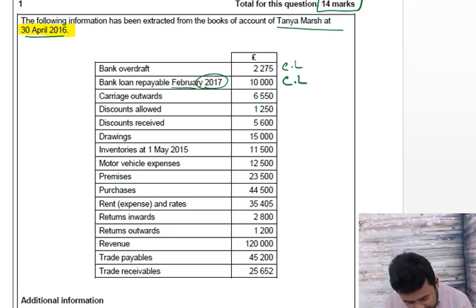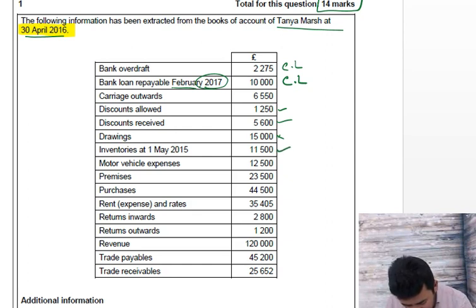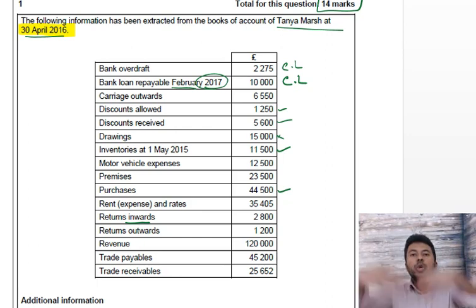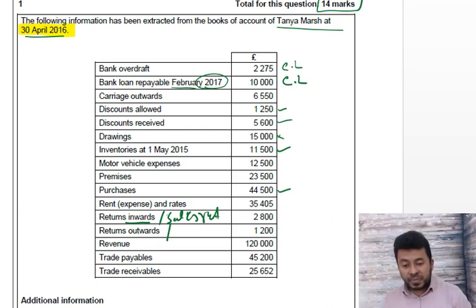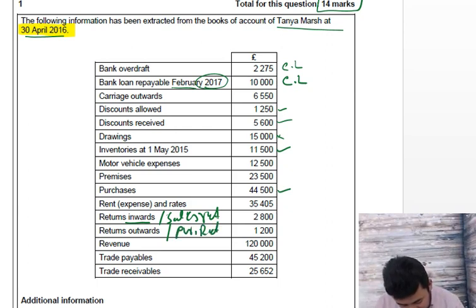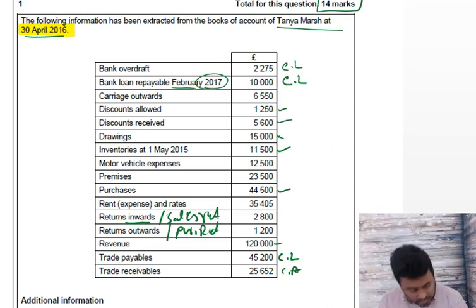Carriage outward doesn't go into gross profit — it goes after gross profit. Discount allowed — we'll take it into account. Cash received — take it into account. Drawings — not needed. Inventory — we'll take into account. Motor expenses — not needed for now. Premises — not needed. Return inwards is needed. Return inward means it's coming in — we sold out and it's coming back in, so it's a sales return. Sales — we'll take into account. Payables are a current liability; receivables are a current asset — not needed for this particular question.